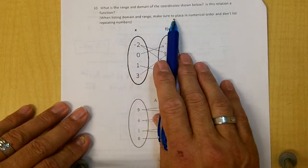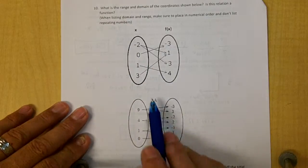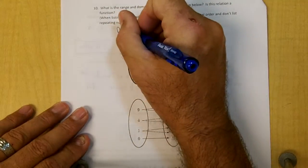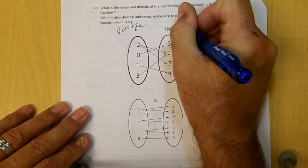When listing the domain and range, make sure to place in numerical order and don't list repeating numbers. So over here, this would be our domain and this would be our range.